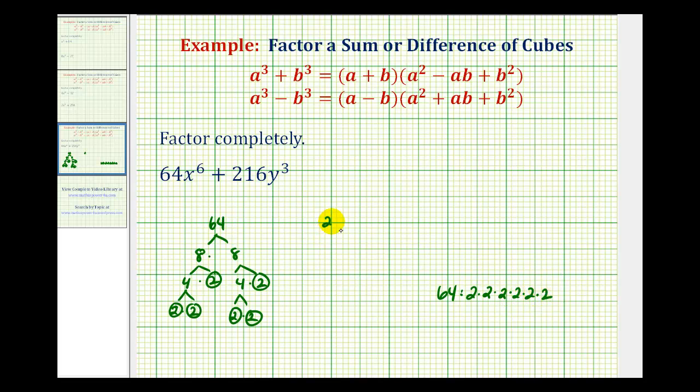And now for 216, we'll start with 2 times 108. 2 is prime. 108 is 2 times 54, 2 is prime. 54 would be 2 times 27, 2 is prime. 27 would be 3 times 9, 3 is prime. And 9 equals 3 times 3, both of these are prime. So for 216, we have 3 factors of 2 and 3 factors of 3.